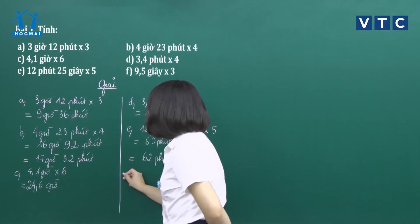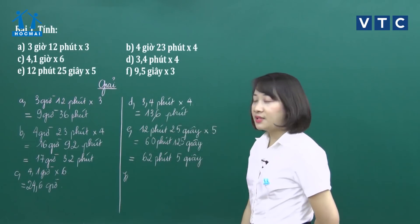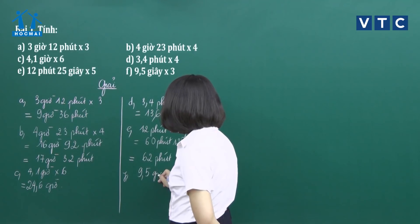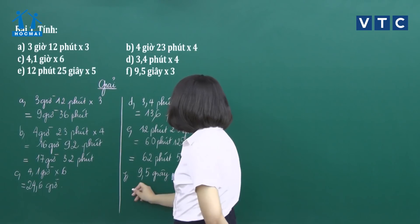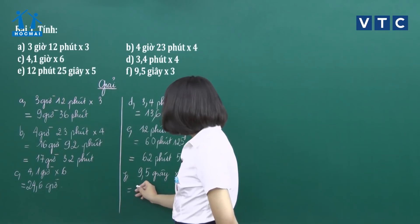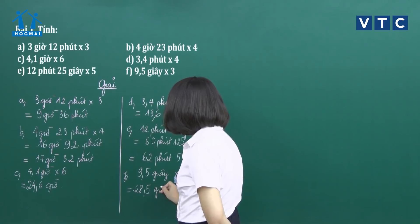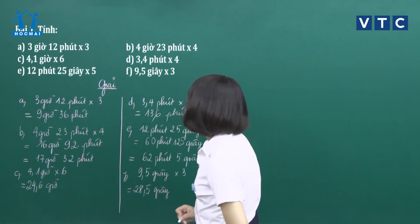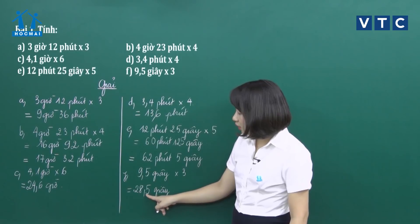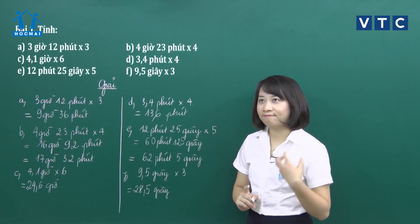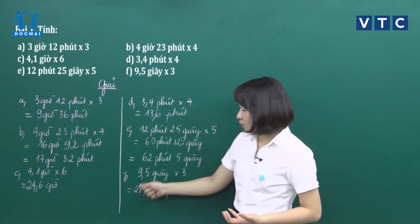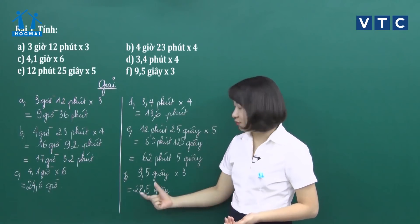Câu F: 9,5 giây nhân 3. Thực hiện: 5 nhân 3 là 15, viết 5 nhớ 1; 9 nhân 3 là 27, nhớ 1 là 28 — được 28,5 giây. Vì giây là đơn vị đo nhỏ nhất rồi, chúng ta giữ nguyên kết quả là 28,5 giây mà không cần phải đổi đơn vị.